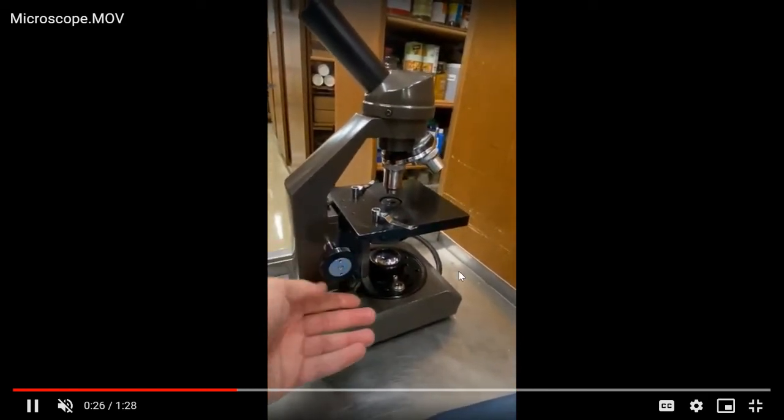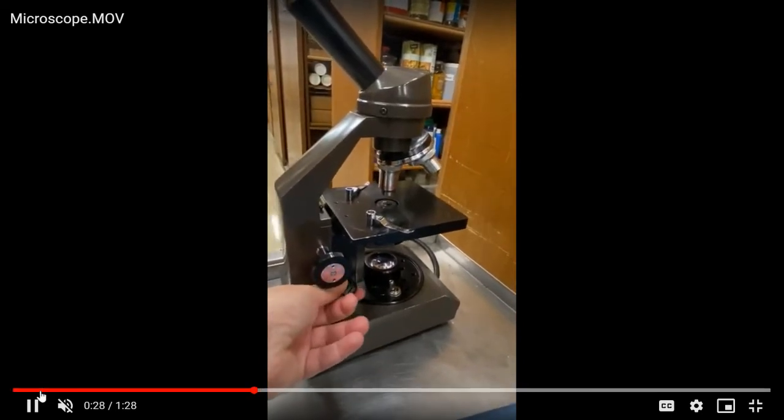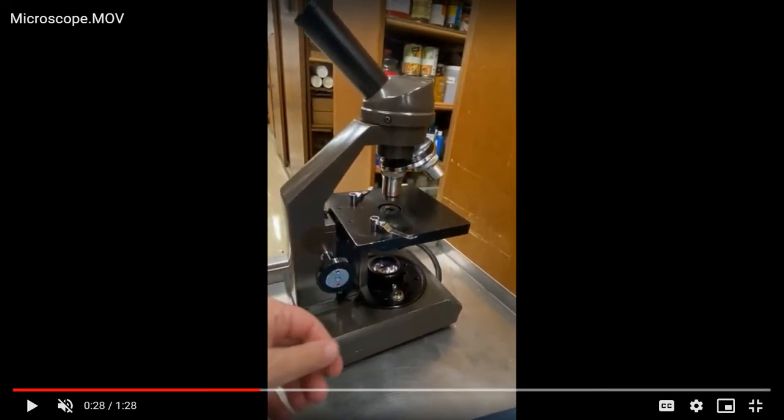Then the smaller knob down here is called the fine adjustment. When you move the fine adjustment, it moves the stage just a little tiny bit at a time.